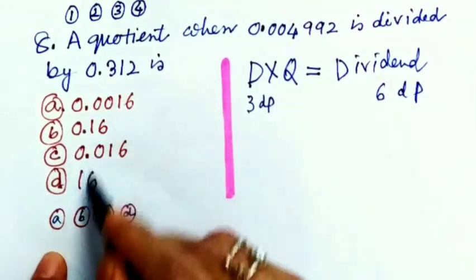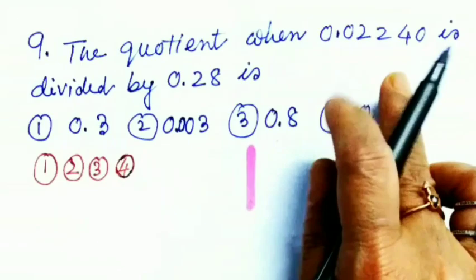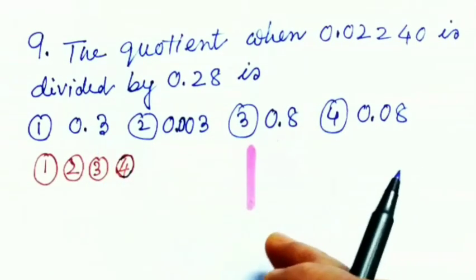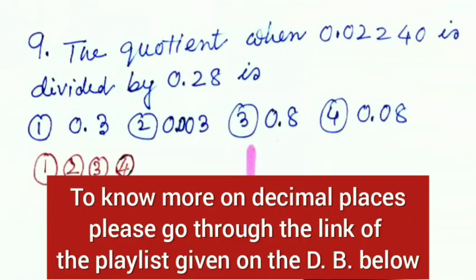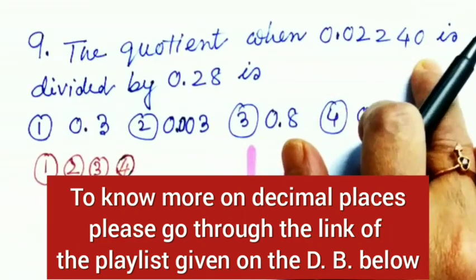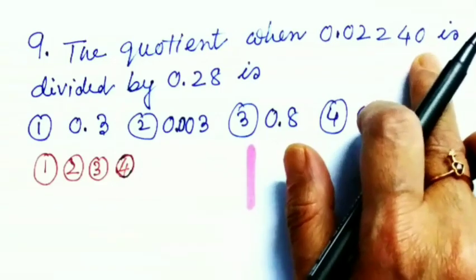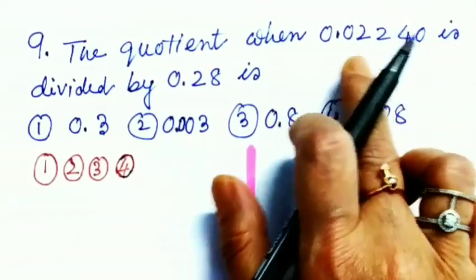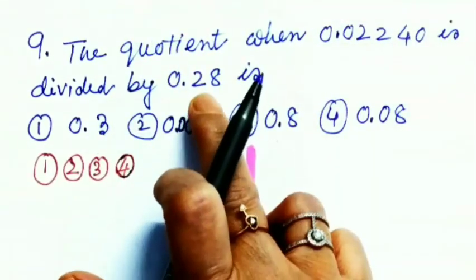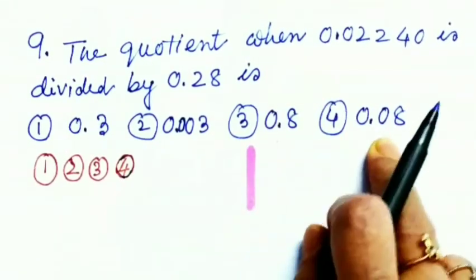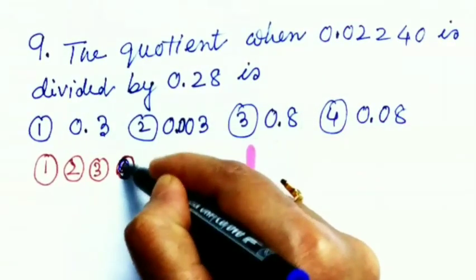Question number 9: The quotient when 0.0240 is divided by 0.28 is? Four choices are given. My dear students, look at this. It's just like the previous one, but the main difference is about decimal places. We won't count this 0 which is not followed by any other natural number. After this decimal point, if this is not followed by any other natural number, we can't count this 0. So the decimal places of this dividend becomes 1, 2, 3, 4 - that means 4. And our divisor has 2 decimal places, so obviously our quotient must have 2 decimal places. So this will be the correct answer.